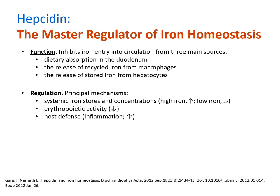The regulation of hepcidin expression is complex, combining iron homeostasis, erythropoietic demand, and nutritional immunity. When plasma iron levels are high, hepcidin expression increases, which stops more iron from entering circulation, preventing a state of iron overload that could lead to the formation of reactive oxygen species.